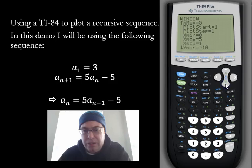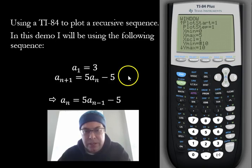And then we can adjust the viewing window for the y values. So y minimum—this sequence is not going to go below the x-axis, so let's make this 0.